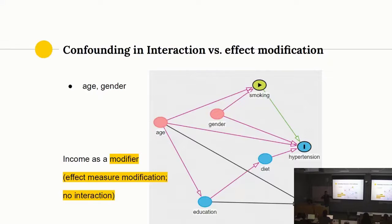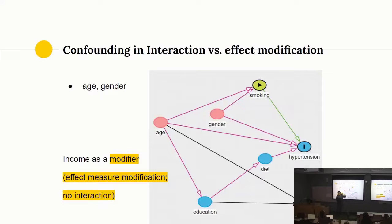That's about it. Whether those estimates are different or not will determine whether there is an effect modification present in this analysis. For example, for high income, the beta coefficient associated with smoking is three. And when doing it for low income, the beta coefficient associated with smoking is four, and it is also significantly different. Then you say, yes, there is an effect modification present because those beta coefficients are different when you are stratifying based on income.